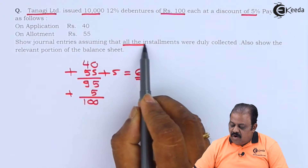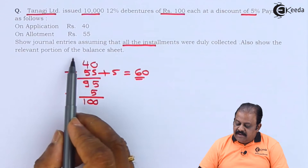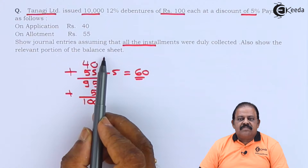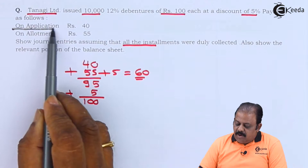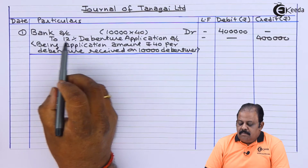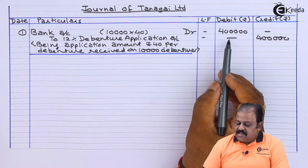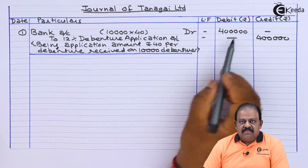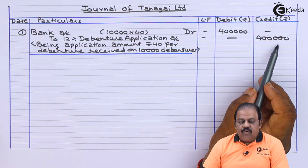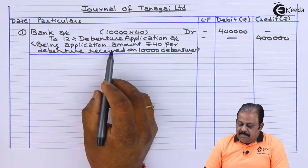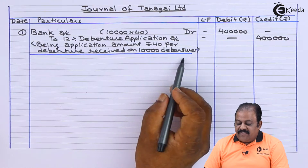Show journal entries assuming that all installments were duly collected, and also show the relevant portion of the balance sheet. We have to record the first entry for receiving the application amount of rupees 40 per debenture. Bank account debit — on 10,000 debentures at 40 rupees — 4 lakhs; to 12% debenture application account 4 lakhs, being application amount rupees 40 per debenture received on 10,000 debentures.